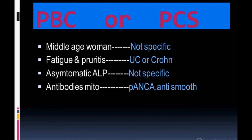In PBC, they can give an asymptomatic patient with increased ALP who comes for a regular follow-up — think of PBC. In PSC (primary sclerosing cholangitis), you don't necessarily see that same alkaline phosphatase elevation pattern. For antibody testing: anti-mitochondrial antibody is very important for PBC, whereas in primary sclerosing cholangitis you see p-ANCA and anti-smooth muscle antibodies. This is how you differentiate the two — play the video again to better understand.